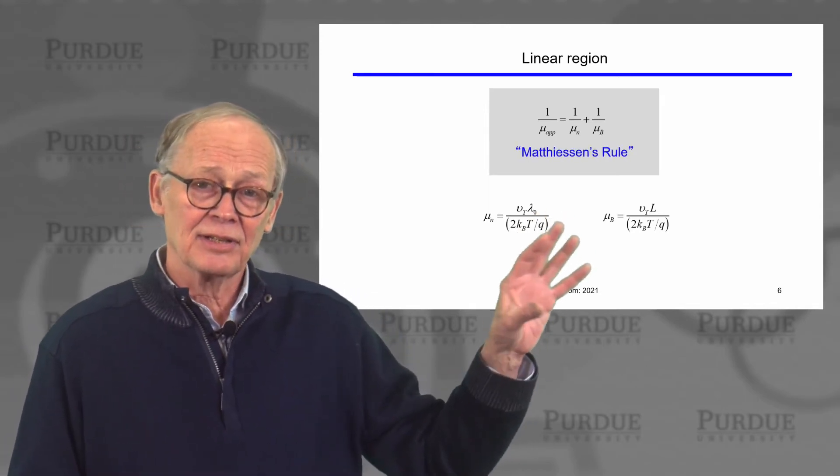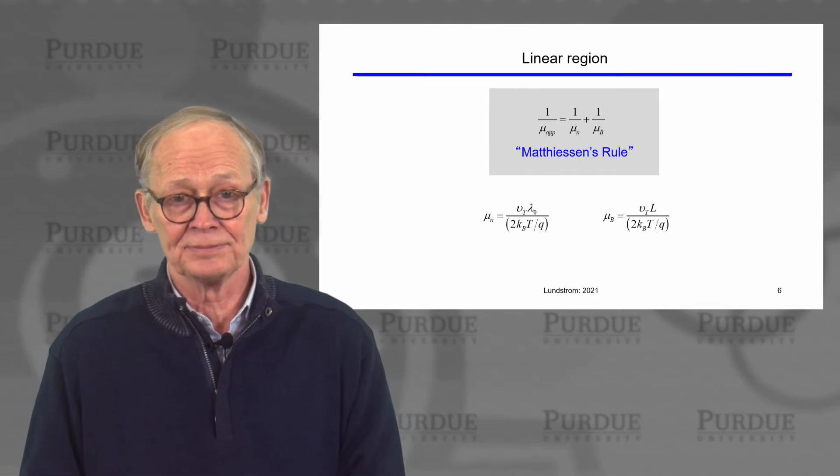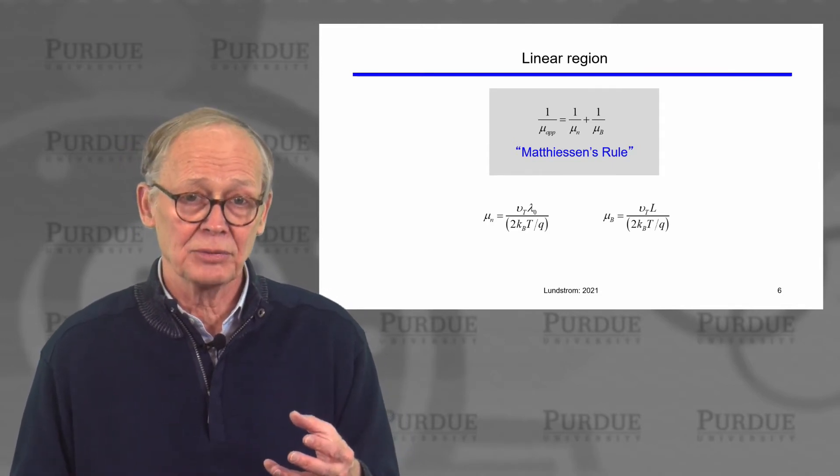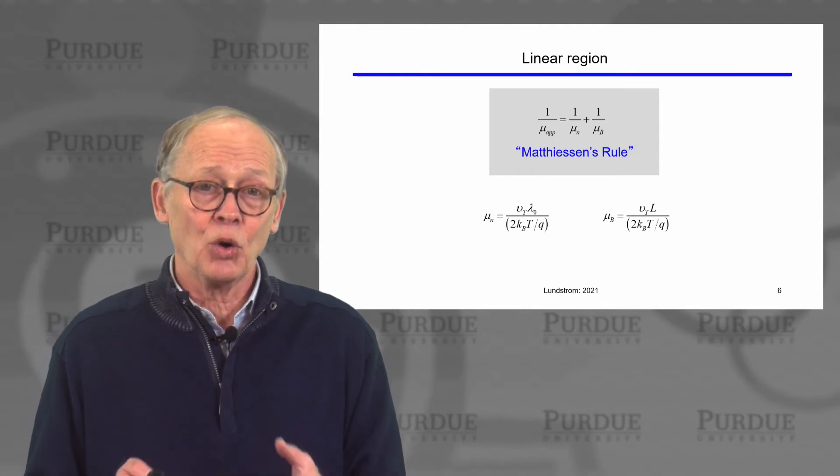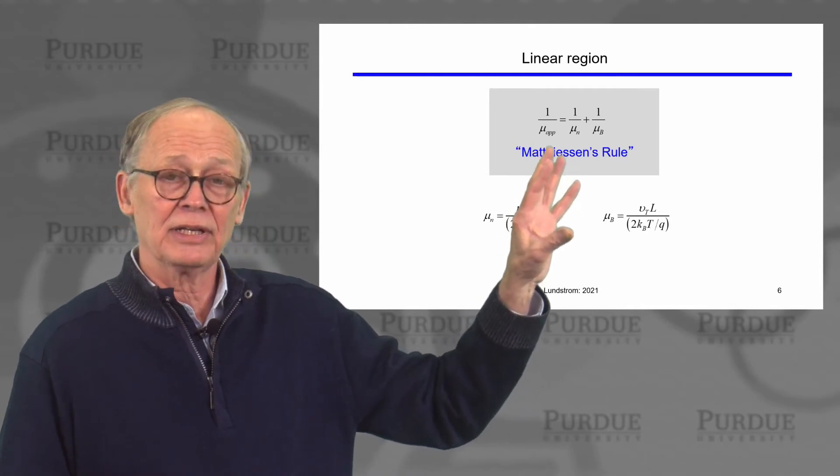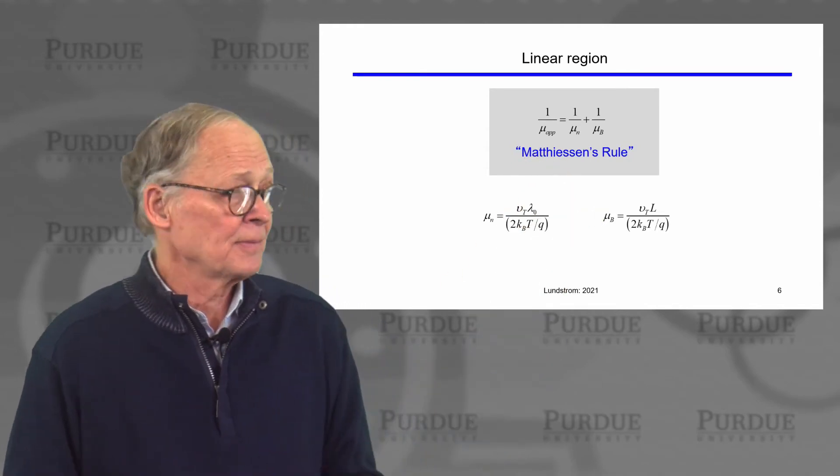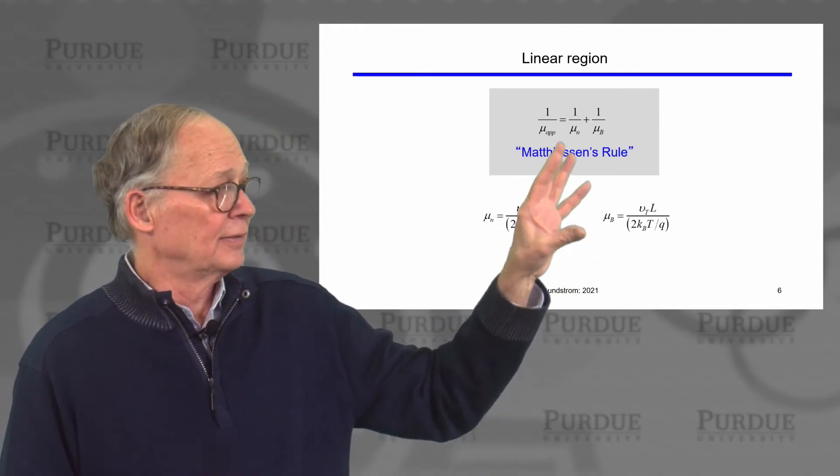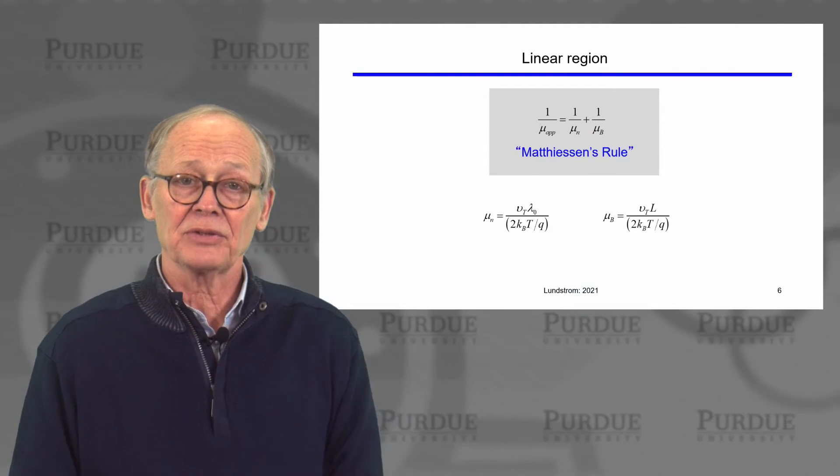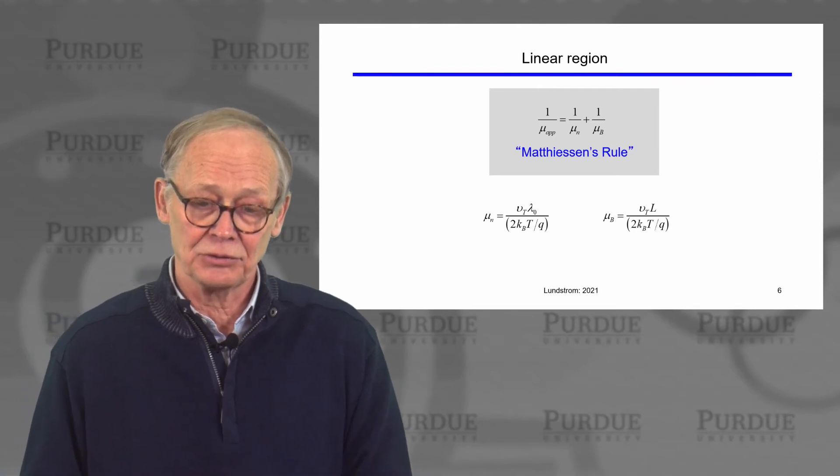This combination of mobility might remind some of you about something called Mathiasin's rule. In traditional semiconductor physics, when we have two different scattering mechanisms that are occurring at the same time and we want the overall mobility due to those two scattering mechanisms, we combine the two mobilities by a prescription called Mathiasin's rule. That's exactly what we're doing here. We are combining the effects of traditional scattering, which are all inside mu sub n, with effects due to ballistic transport, which are described by the ballistic mobility, in an expression that looks exactly like Mathiasin's rule.